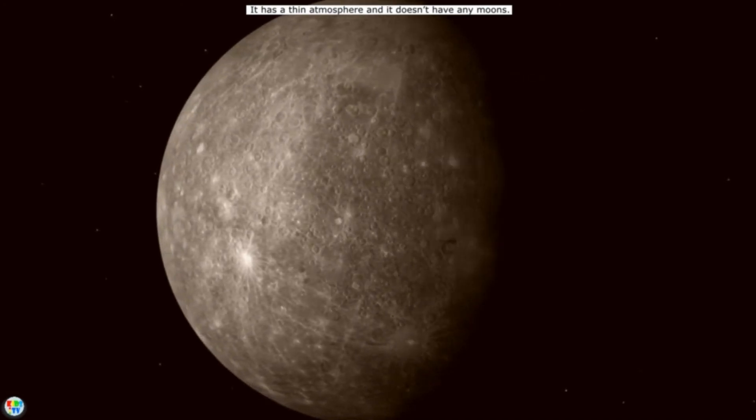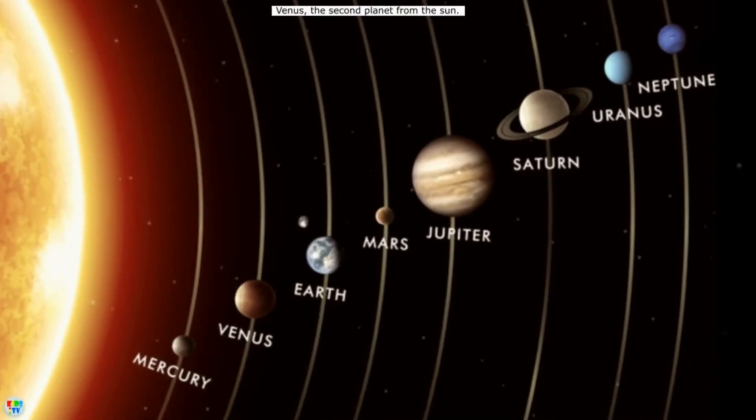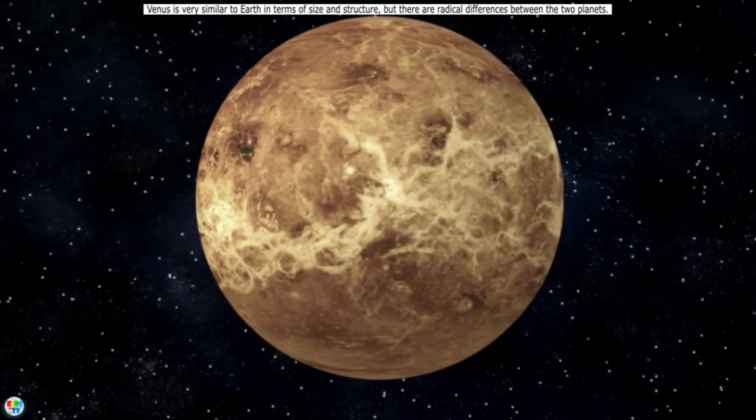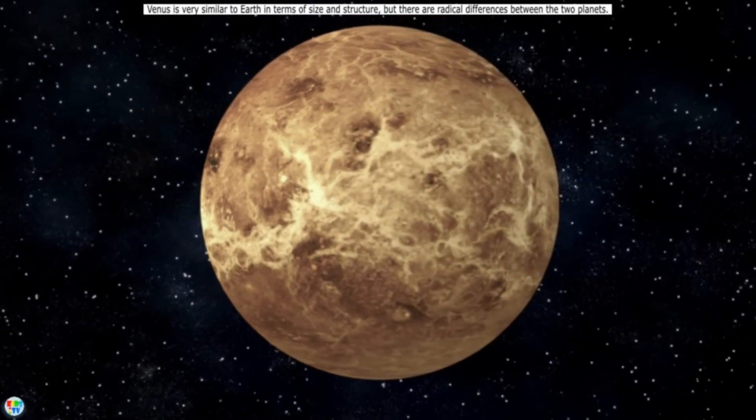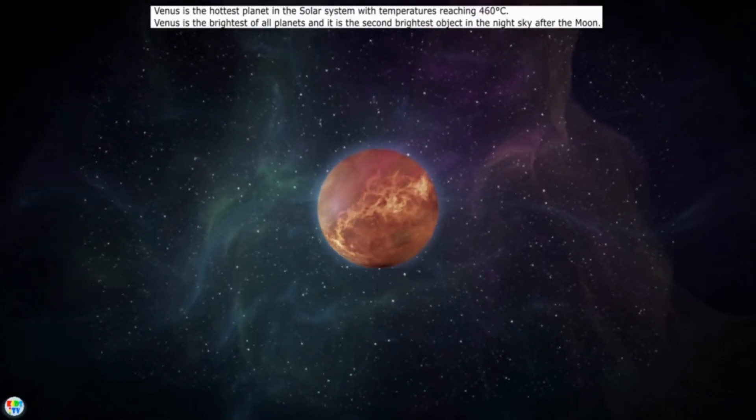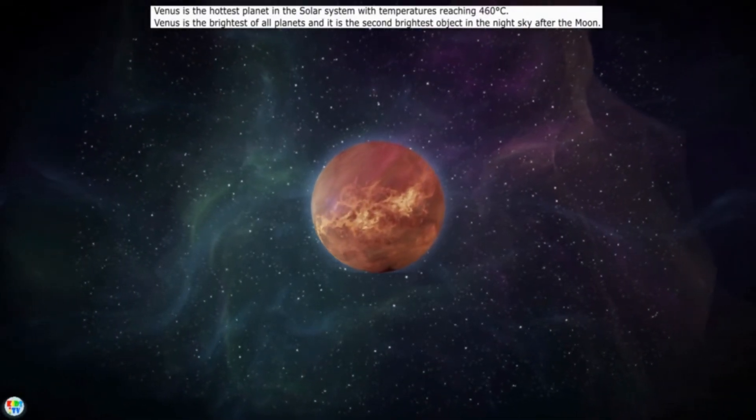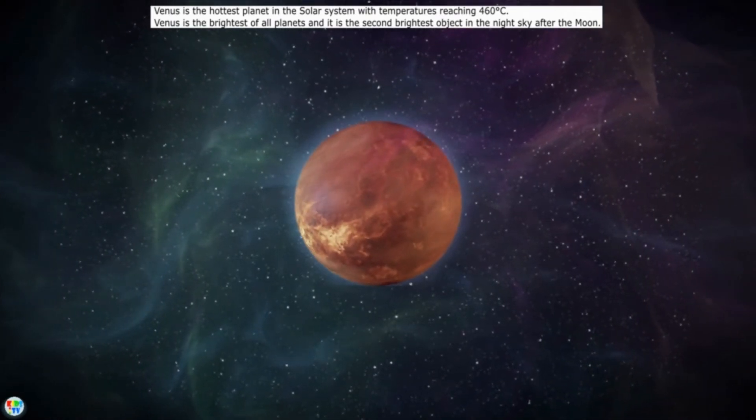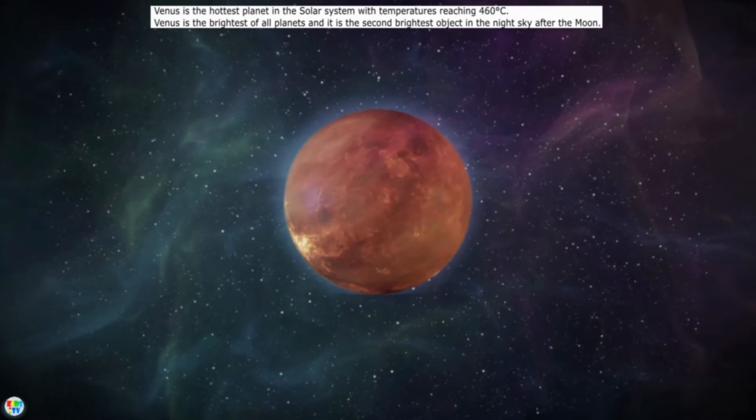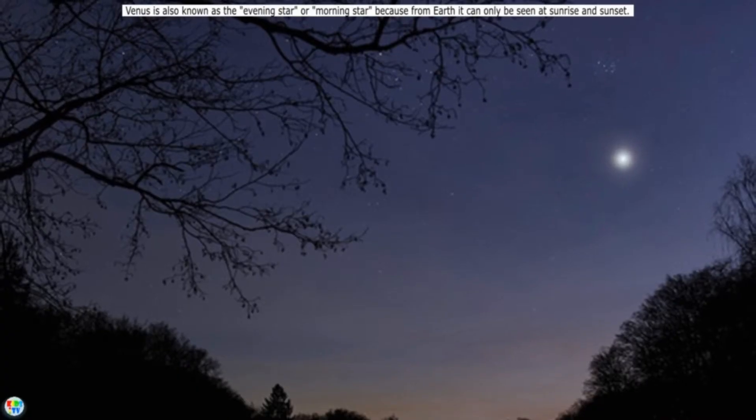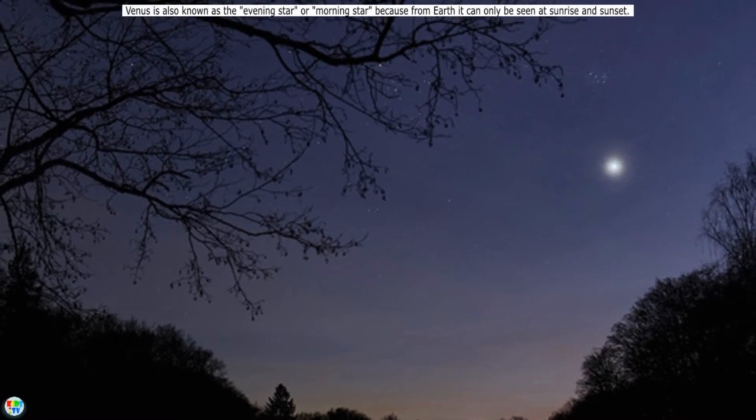Venus, the second planet from the Sun. Venus is very similar to Earth in terms of size and structure, but there are radical differences between the two planets. Venus is the hottest planet in the solar system with temperatures reaching 460 degrees Celsius. Venus is the brightest of all planets and it is the second brightest object in the night sky after the moon. Venus is also known as the evening star or morning star because from Earth it can only be seen at sunrise and sunset.